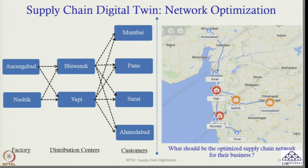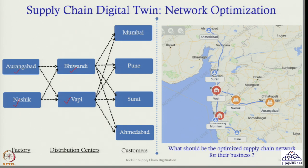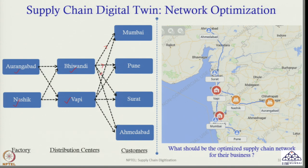I need to find out where should they locate the factory — should they locate in Aurangabad, in Nasik, or should they locate two factories, one in Aurangabad and another in Nasik. Where should they locate the distribution centre — in Vivandi, Vapi, or both? Once they decide on factory locations, they also need to find out which distribution centre will be serving which market.